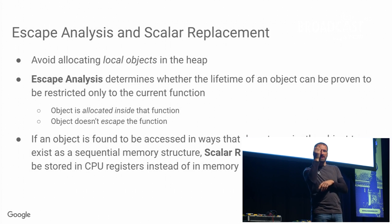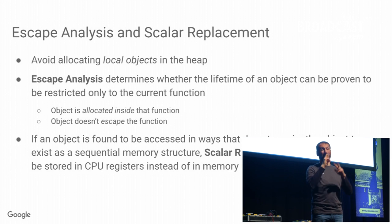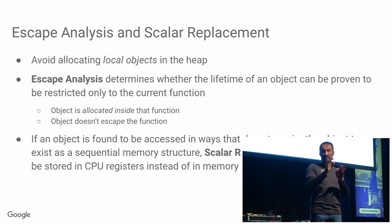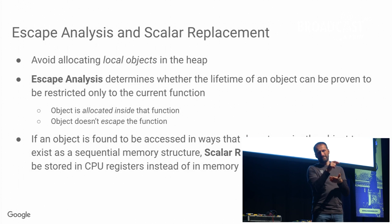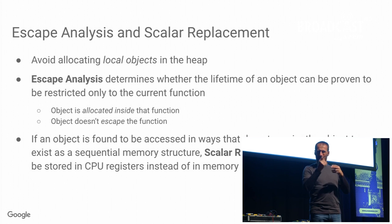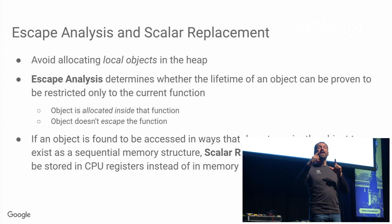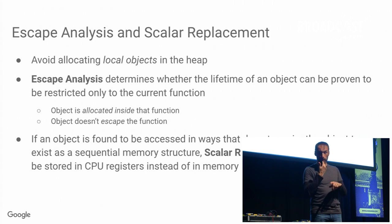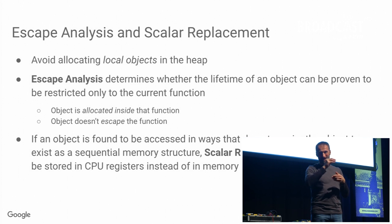There are two parts here. First is the escape analysis: its job is to figure out whether the lifetime of an object is restricted to a function invocation. So you allocate the object inside that function and you never return it and it doesn't outlive the function — when you return, you know the object is dead. The second part is scalar replacement: given that you know an object doesn't escape, it can remove the allocation so we don't put it on the heap and can represent the object in CPU registers.